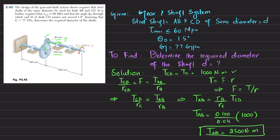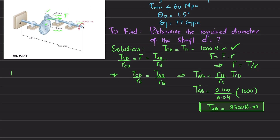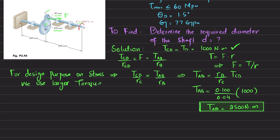We now have T_AB = 2500 N·m in shaft A-B and T_CD = 1000 N·m in shaft C-D. For design purposes, we must use the larger torque, which is T = 2500 N·m.